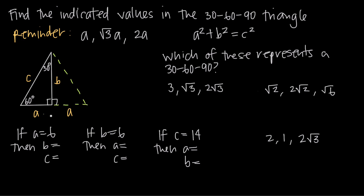Keep in mind that this is an equilateral triangle, so the length of the base is going to be equal to the length of side C. In other words, 2A is equal to C, or A is equal to C over 2. What this relationship tells us is that when we have a 30-60-90 triangle, the length of the shortest side is always going to be half the length of the hypotenuse.